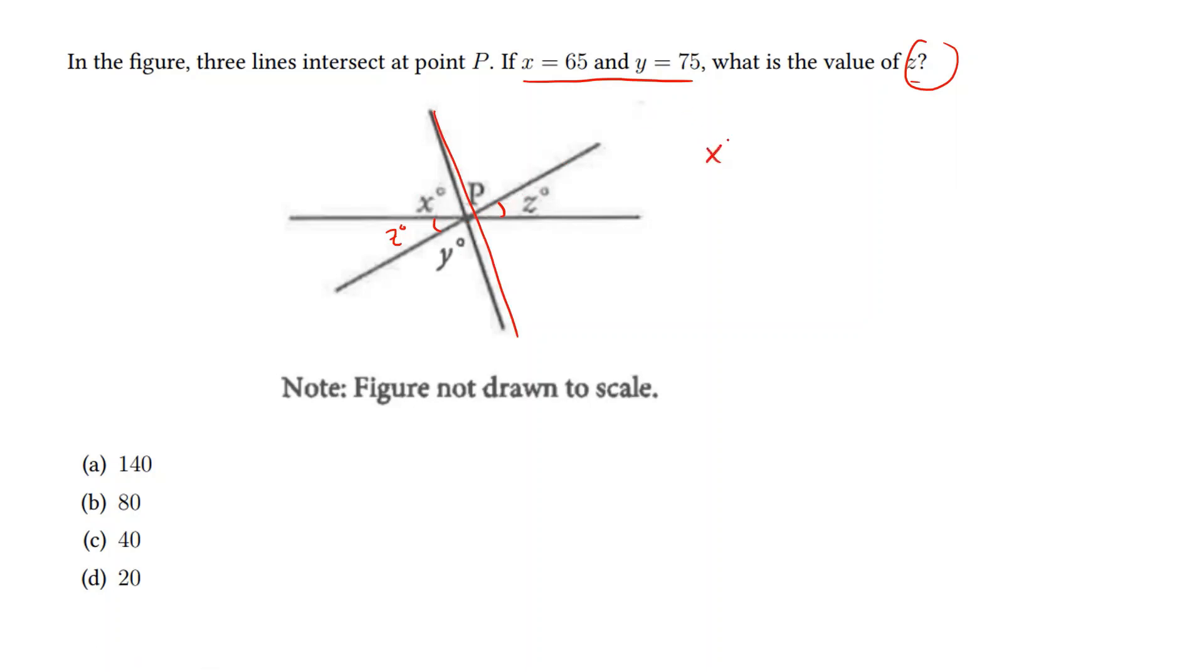Thus, x degrees plus z degrees plus y degrees all add up to a flat line, or 180 degrees. Note that we're provided with x and y. Thus, we have 65 degrees plus z degrees plus 75 degrees is equal to 180 degrees. This means that z is 40.